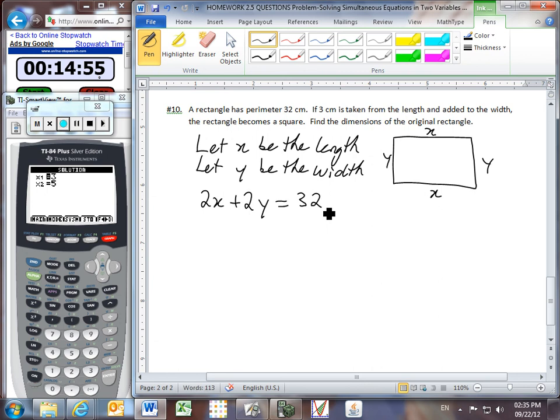We're also told that if 3 centimeters is taken from the length, so we take away 3 centimeters from the length, and then we add it to the width, so we'll add those 3 centimeters to the width, the rectangle becomes a square. Now, in the case of a square, we can see that all of our sides are equal. In other words, x and y would become equal to one another. So here's our new length. I took 3 centimeters away from it, and if I'm going to add the 3 centimeters onto my width, my new length and my new width must be equal to one another. So here's my system of equations.